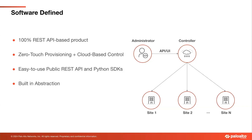The IONs have built-in zero-touch provisioning — you plug them in, they connect to the controller, and via the controller they learn all their configurations. We've always had RESTful API documentation you can look up, as well as Python SDKs that have helped customers with automation. The last piece is built-in abstraction, which is critical because day-two operations aren't just about template modifications — customers also want to change path policies, QoS, and different application settings from a security perspective.